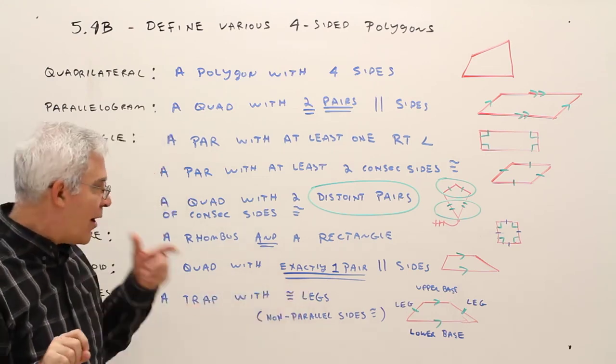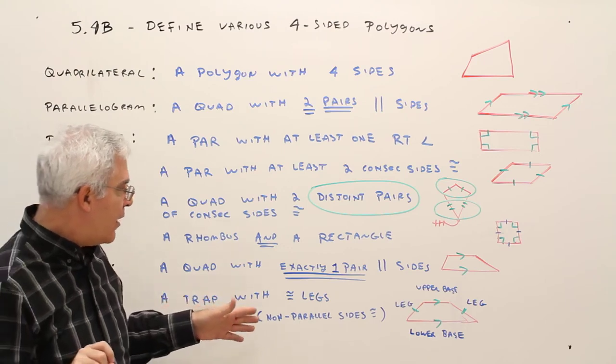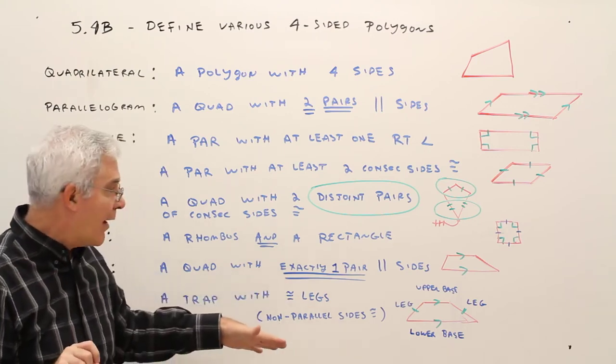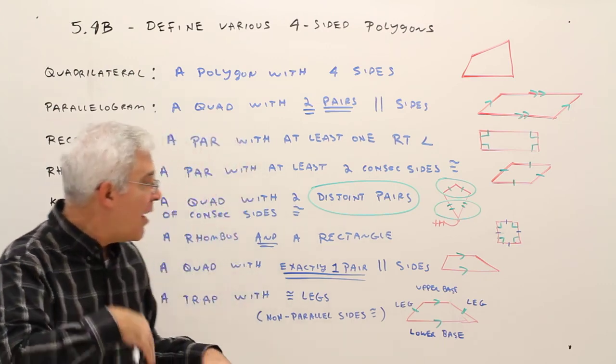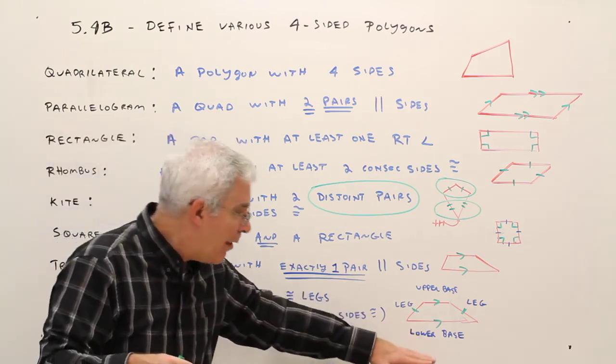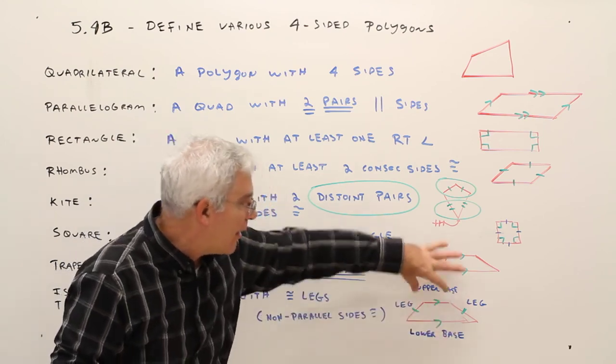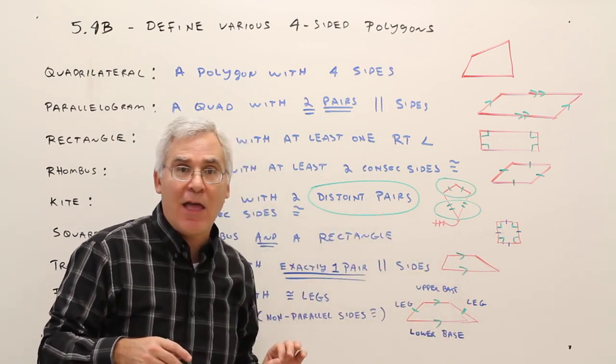The isosceles trapezoid is a trapezoid where the legs are congruent. The legs are the non-parallel sides. In future videos we'll talk about the lower base and the upper base, the lower base angles, the upper base angles, things like that.